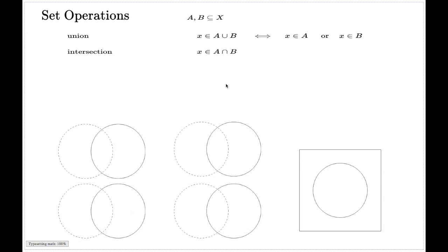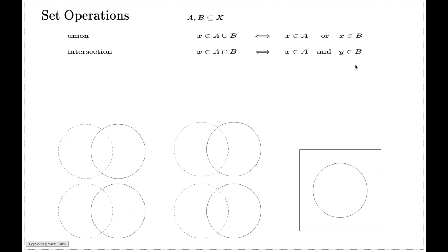x belongs to the intersection of two sets, and that is equivalent to saying that x belongs to A and x belongs to B at the same time.